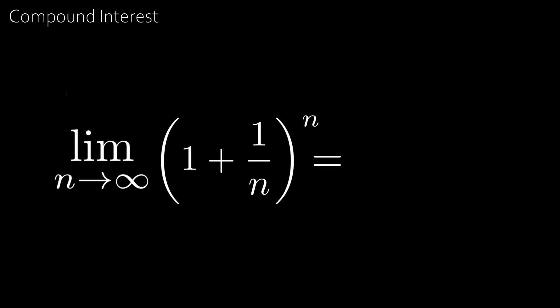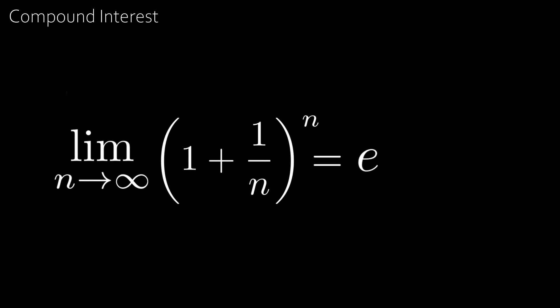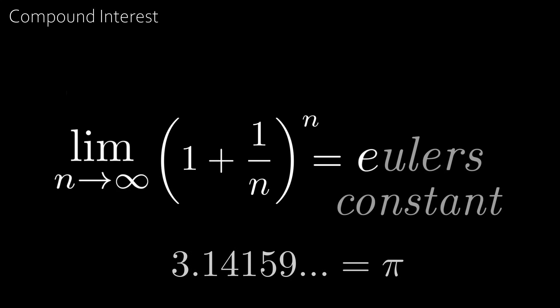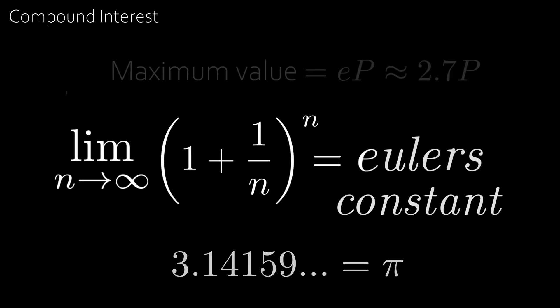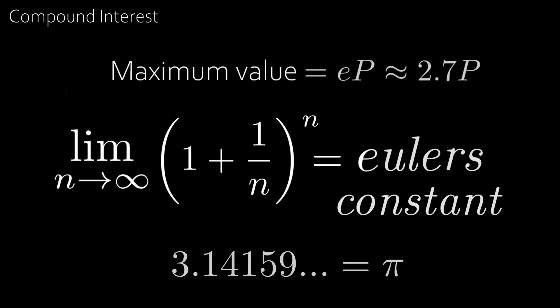We can actually calculate this number, and it turns out to be the irrational number 2.71828... This number is famously written as the letter e, similar to how we write 3.141... as pi. E is known as Euler's constant, and the maximum amount we could end up with is e times P, or about 2.7 times P.